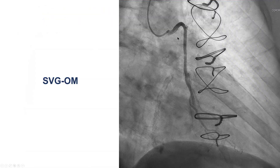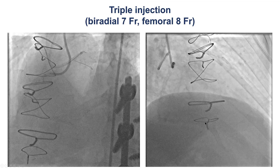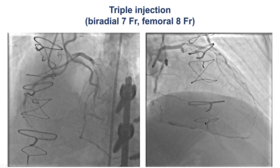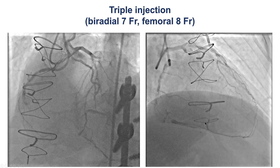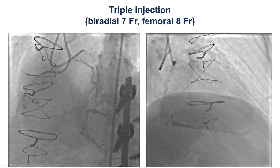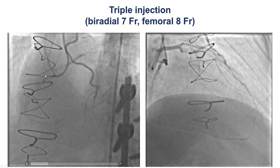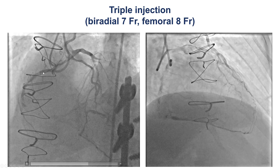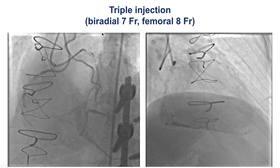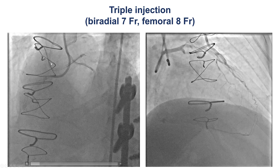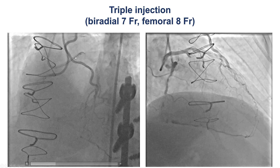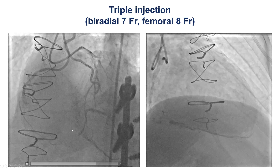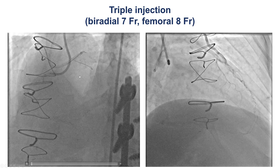This is the image of the SVG to the obtuse marginal that was patent. Patients like this may benefit from triple injection, in which one injects the bypass graft or more than one bypass graft. In this case, we had antegrade injection of the right coronary artery engaged through femoral access, then biradial access. One catheter on the left was a LIMA catheter, and the other was an EBU guide filling the left main. This triple injection was very important for clarifying the anatomy.